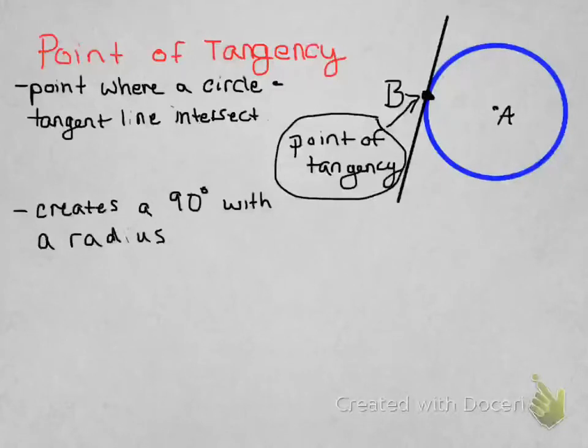In this case, point B is the point of tangency. Now one major thing about this point of tangency is that it creates a 90-degree angle with the radius.